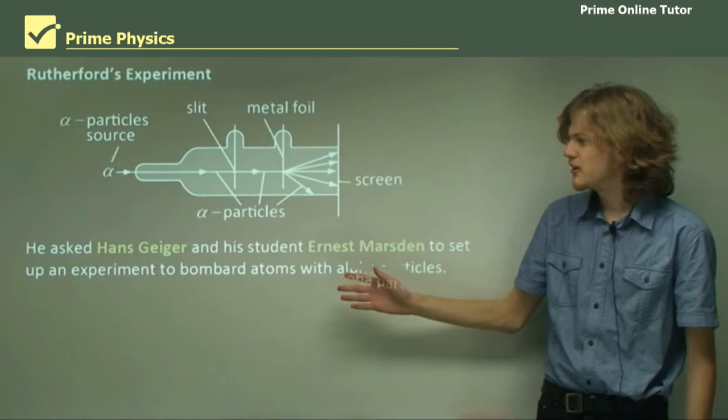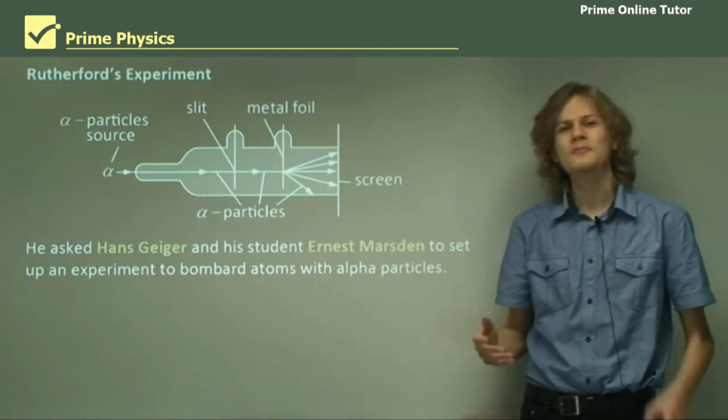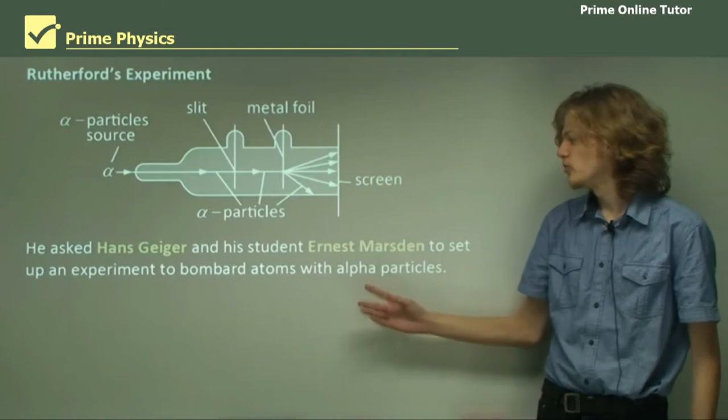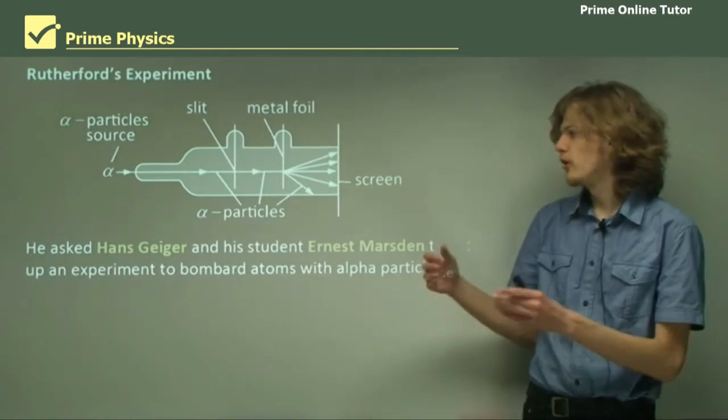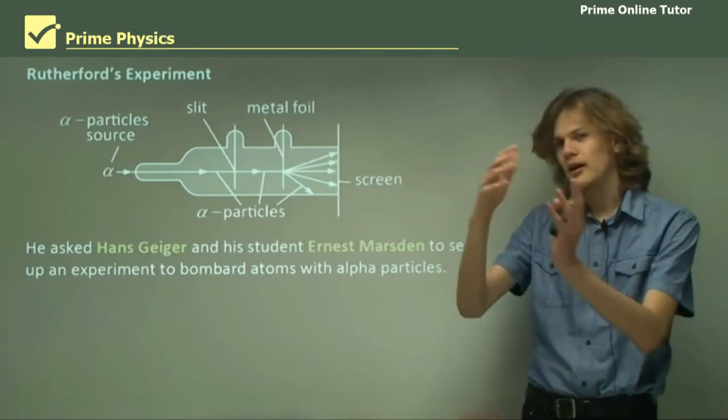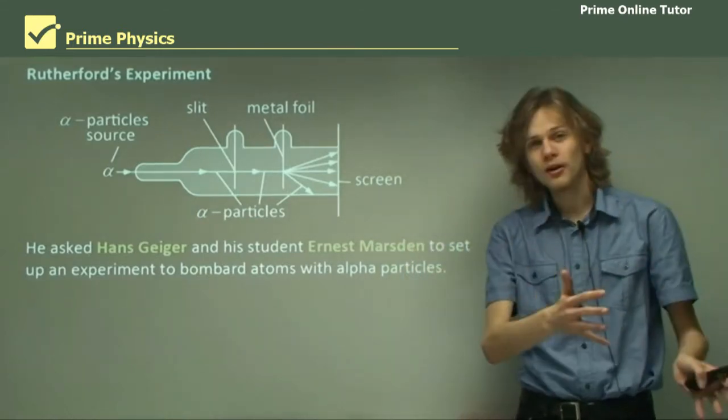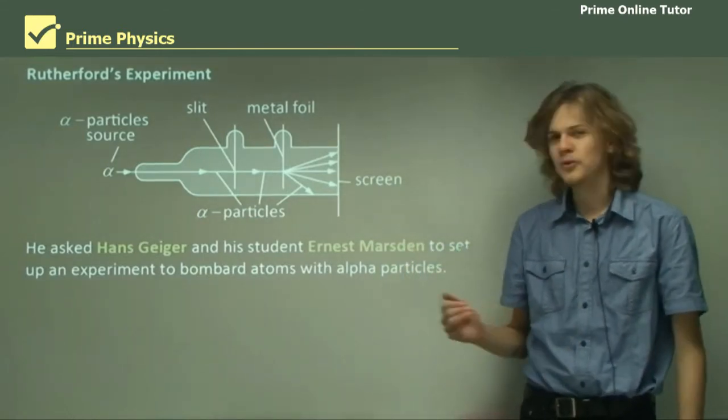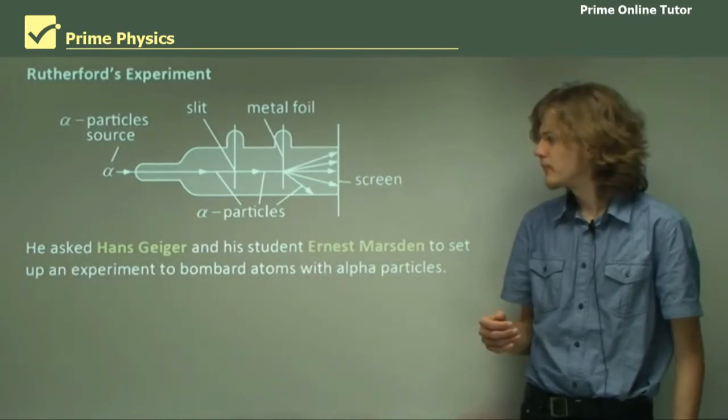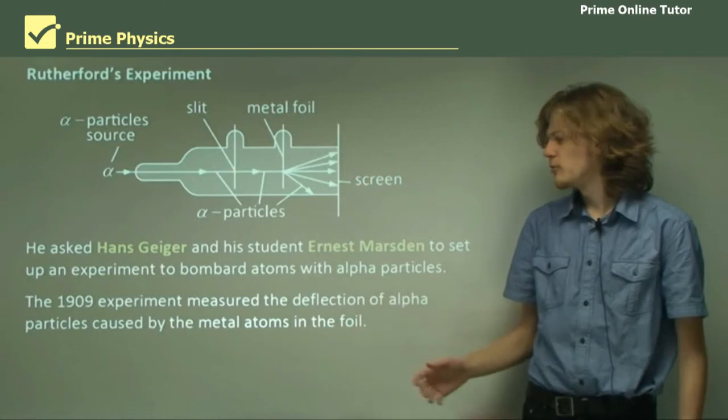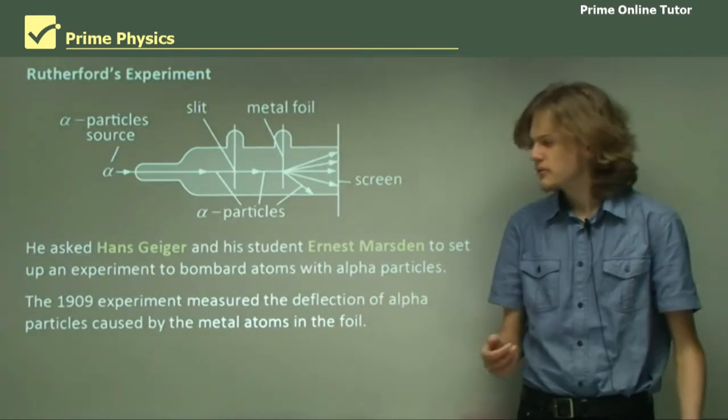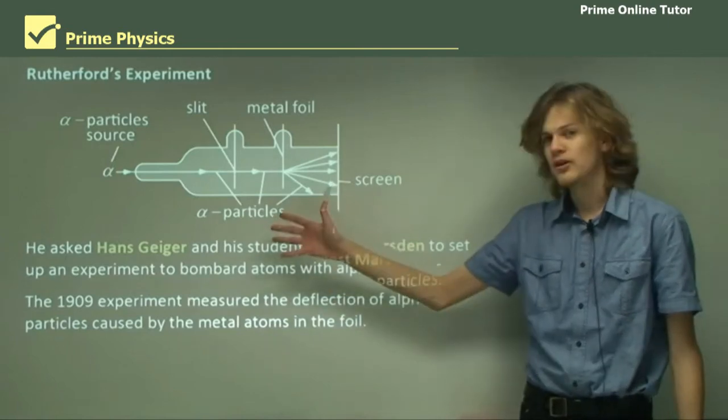He asked Hans Geiger, whose name is remembered in the Geiger counter, and Geiger's student Ernest Marsden, to make an experiment that would bombard atoms with alpha particles. This experiment, due to the people who first did it, is called the Geiger Marsden experiment. The 1909 experiment measured the deflection of alpha particles by atoms. We can see the setup that they used over here.